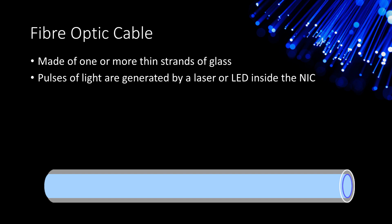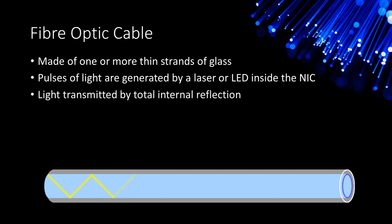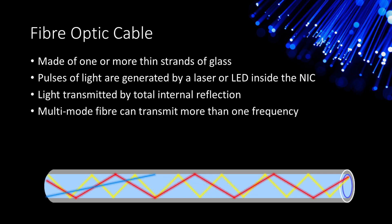The fibre optic network interface card also has a light detector inside it, so that it can receive light signals and convert them back into electronic data. The light is transmitted inside a strand of glass using a physical principle known as total internal reflection. In other words, the light bounces off the internal walls of the cable as it travels. This allows fibre optic cable to be bent and twisted, just like copper cable, and it will still work. In fact, if it is thick enough, a single glass strand can transmit several beams of light at the same time, as long as those beams have slightly different frequencies. This is called multi-mode fibre optic cable.